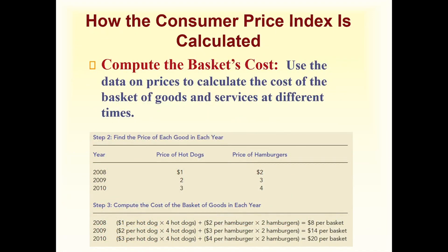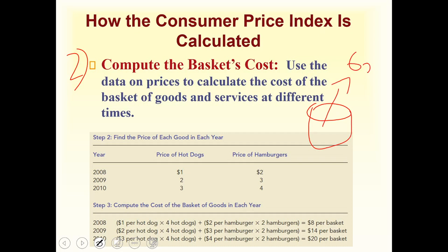Moving on, the second step is to compute the basket's cost — use data on prices to calculate the cost of the basket of goods and services at different times. In the first step we fixed the basket of around 600 goods. Now we track the prices of those goods and services to see whether they have increased or decreased. In our example, we have two goods: hot dogs and hamburgers.